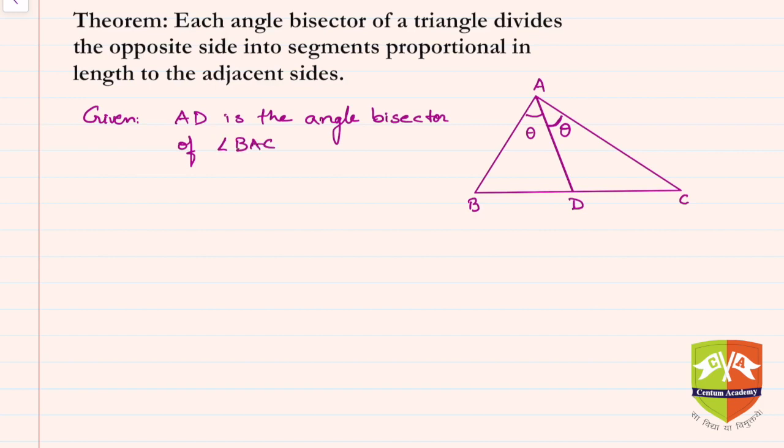Now, to prove: what do we need to prove? We need to prove AB upon AC is equal to BD upon CD. That's what we have to prove.